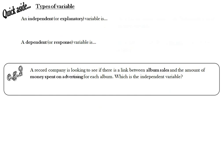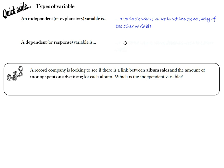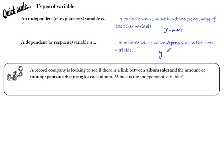There are two types of variable. An independent variable is one where the value is set independently of the other variable — also known as an explanatory variable. A dependent variable is one where the value depends on or responds to the other variable — also called a response variable. By convention, the independent variable is plotted on the x-axis and the dependent variable on the y-axis.